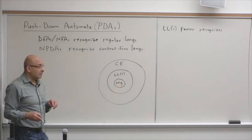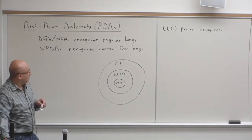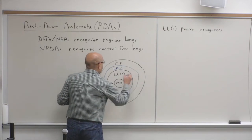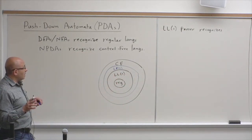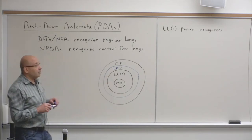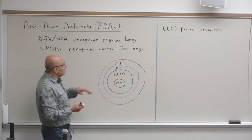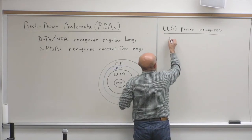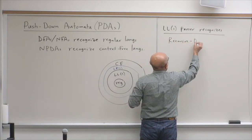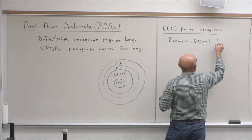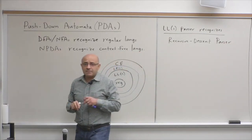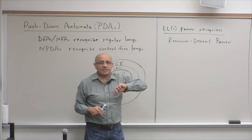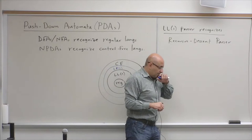Regular languages are the easiest. There are other parsing techniques we mentioned but didn't study — like LL1, which recognizes a larger subset of context-free languages than LL1 does. An LL1 parser can be implemented using what we call a recursive descent parser. The LL1 parsing technique can be done using recursive descent parsing if the grammar is LL1.